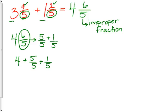So 4 plus 5 fifths plus 1 fifth equals — I know 5 fifths equals 1. So 4 plus 1 is 5, plus 1 fifth is 5 and 1 fifth. We're going to use the same idea when we're subtracting. Take a minute, get this in, and we're going to try the subtraction.